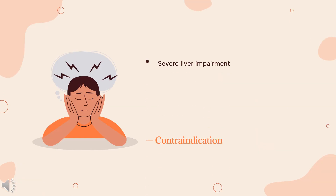Contraindication: Severe liver impairment — Child-Pugh score 10–15 — is a contraindication for treatment with galantamine, whether immediate or extended release. A patient currently on therapy with the immediate release tablet and at a steady state, receiving stable doses, can be converted to extended release capsule treatment.